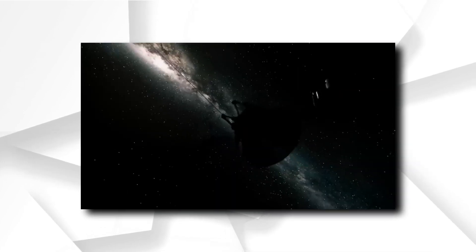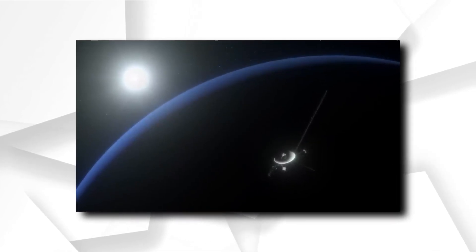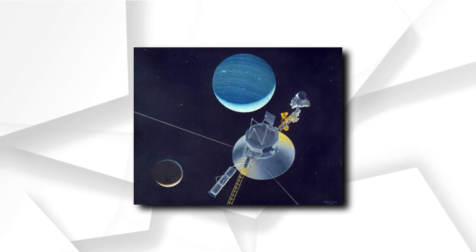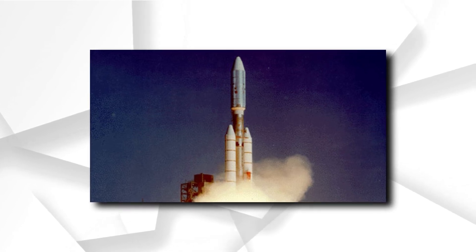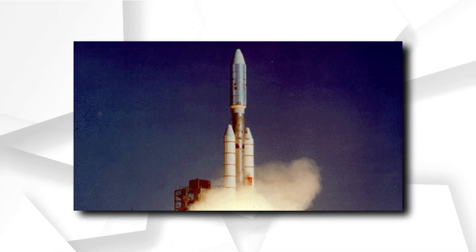Communications: Voyager 2 had a sizable 3.7 meter or 12 foot parabolic high-gain antenna to transmit data via the Deep Space Network on Earth. Communications are carried out over the S-band with a wavelength of about 13 centimeters and X-band with a wavelength of about 3.6 centimeters, offering speeds as high as 115.2 kilobits per second at Jupiter's distance and then steadily diminishing as distance increases. Digital tape can store around 64 kilobytes of data for transmission at a later time when the spacecraft is unable to interact with Earth.